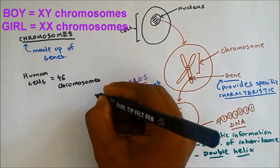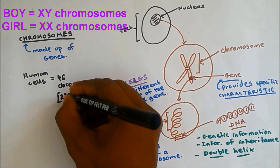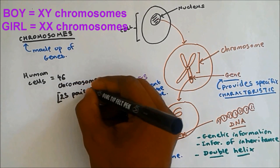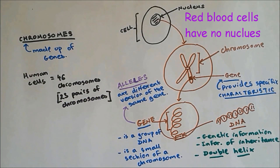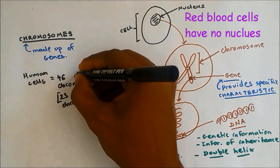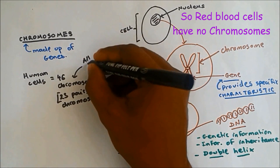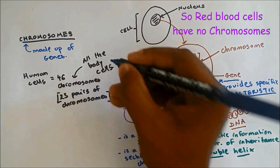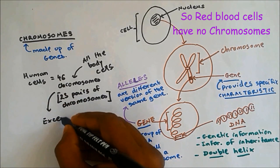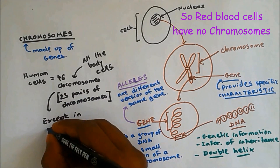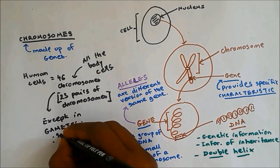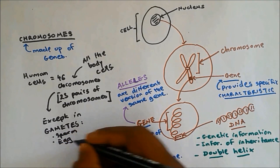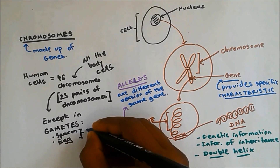These 46 chromosomes can be called 23 pairs of chromosomes. This number of 46 chromosomes is found in every single cell in the body — all the body cells — except in gametes. What are gametes? Gametes are sperm or egg, also known as sex cells.